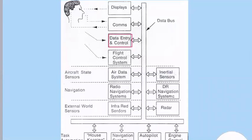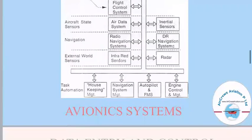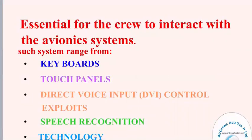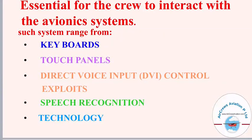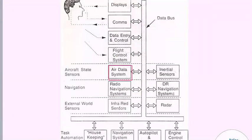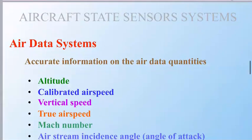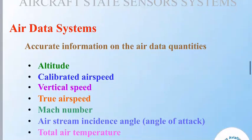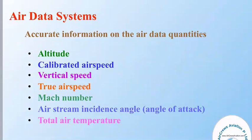After communication, we will talk about data entry and control, which is essential for the crew to interact with avionic systems. Such systems range from keyboards, touch panels, direct voice input, and speech recognition. Next is the air data system, which provides accurate information on air data quantities including the altitude of the aircraft, calibrated speed, vertical speed, true airspeed, Mach number of the flight, airstream incidence angle — also known as angle of attack — and total air temperature.